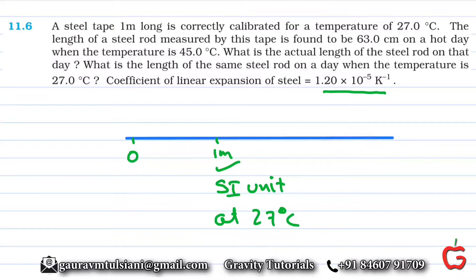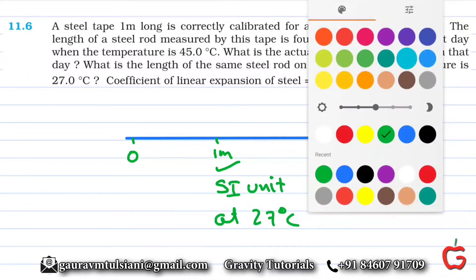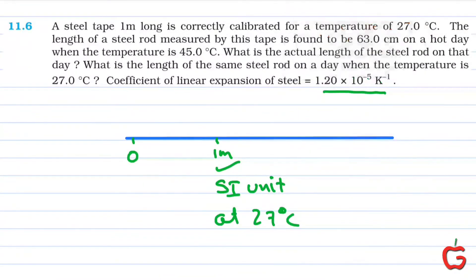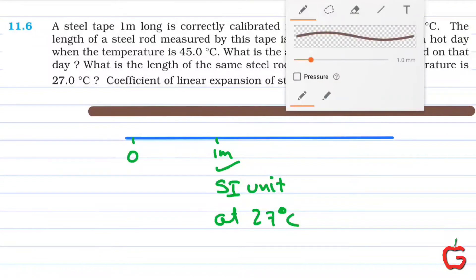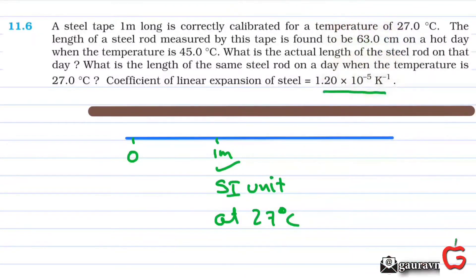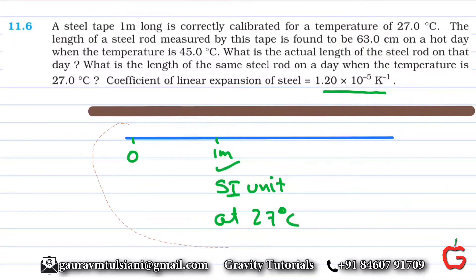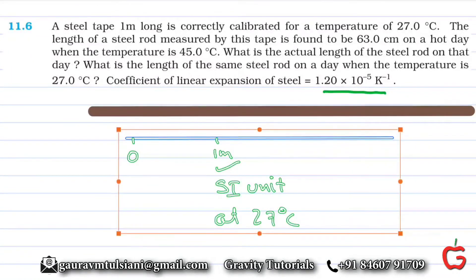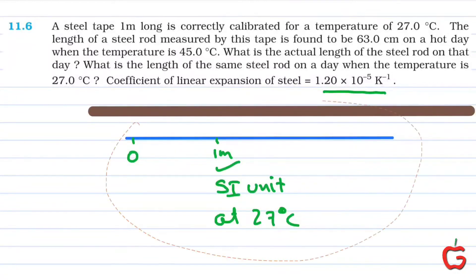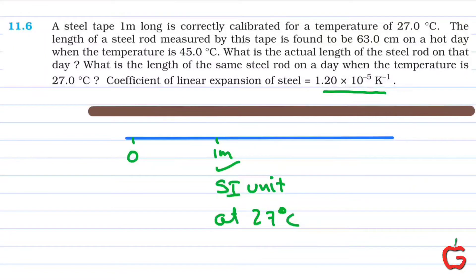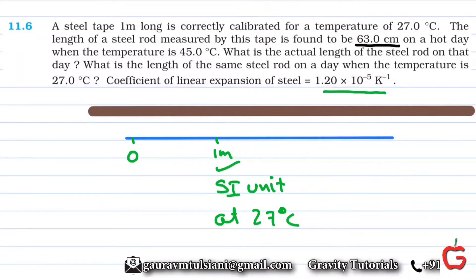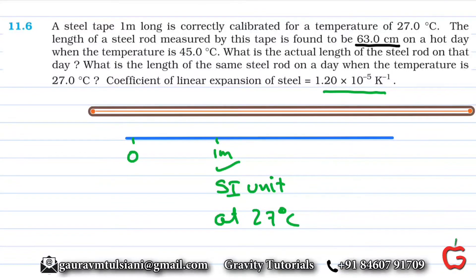Now, the length of a steel rod is measured to be 63 centimeters on a hot day when the temperature is 45 degrees Celsius. That measurement is taken by the steel scale, but the steel scale has also expanded — it is no longer exactly one meter. Since the one meter of the steel scale is now a little more than actual one meter, the reading obtained for the steel rod would also be slightly more, giving us 63 centimeters as the expanded measurement.